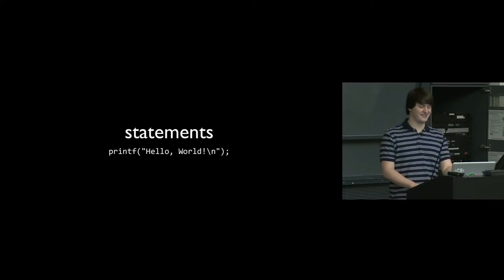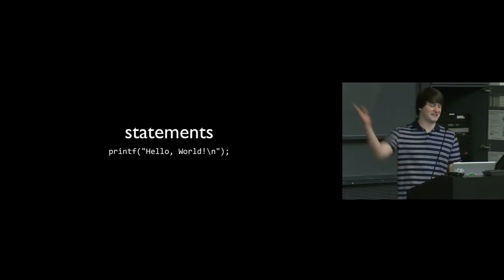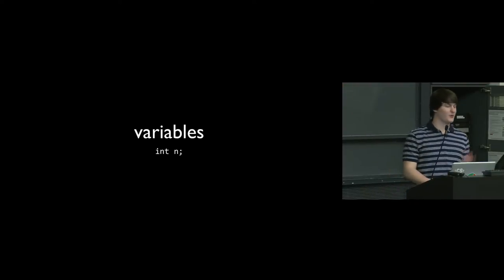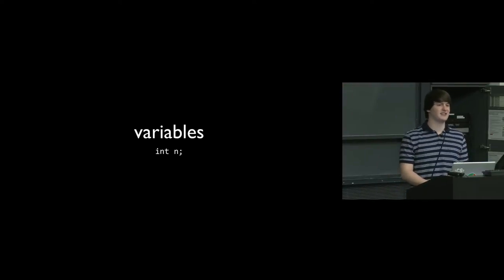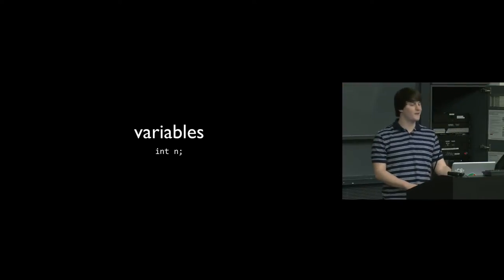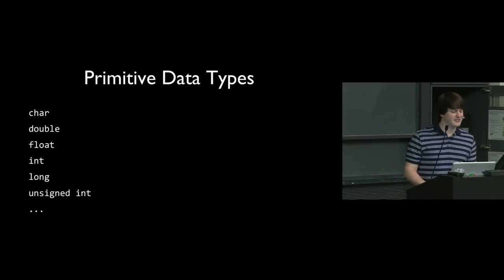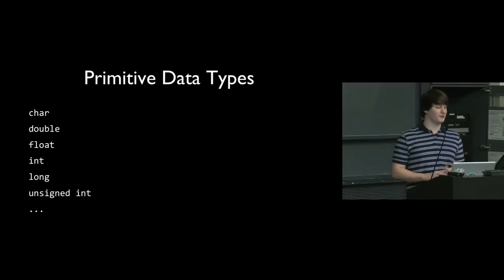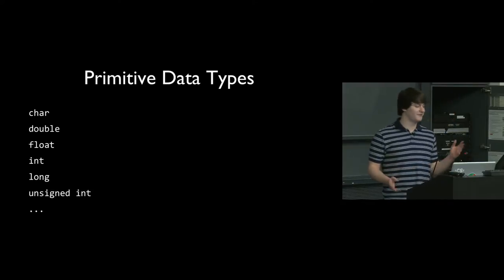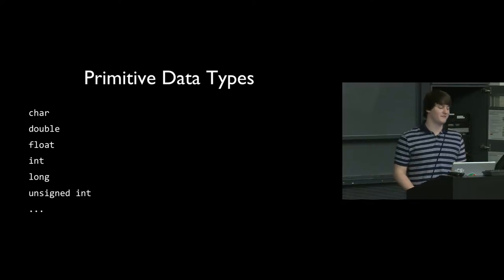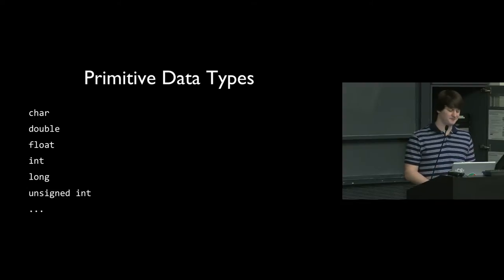Statements — that is a statement. Variables: you just declare them as int n, or you can say int n = 0. That's going to be the same when we get to Objective-C. We have all of our regular primitive data types: char, double, float, int, long, and then the modifiers like unsigned int and unsigned double.